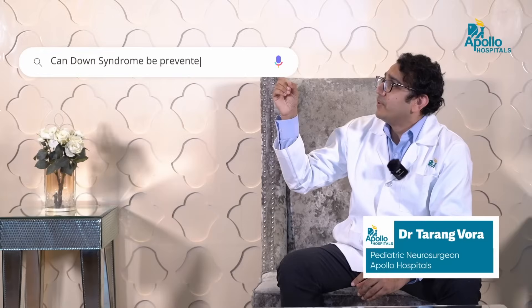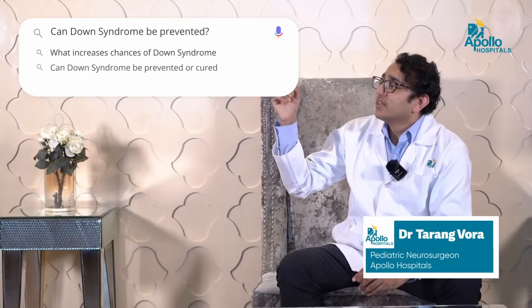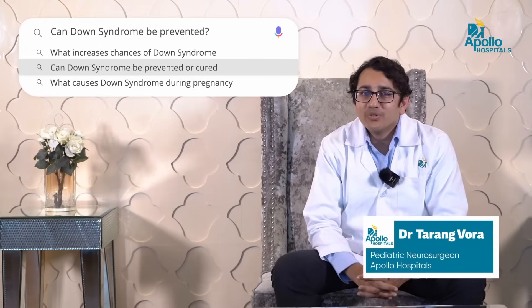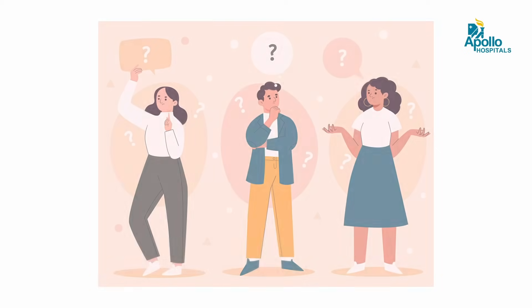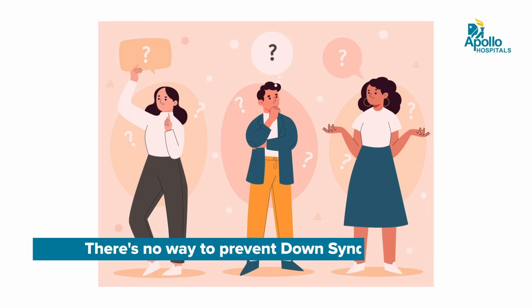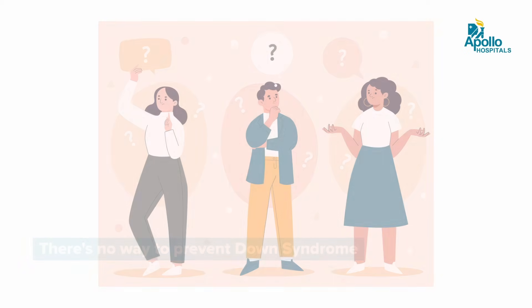Can Down syndrome be prevented? No, Down syndrome cannot be prevented. As of now, we do not fully understand which group of individuals get Down syndrome or what the risk factors during pregnancy are that cause a child to have Down syndrome.